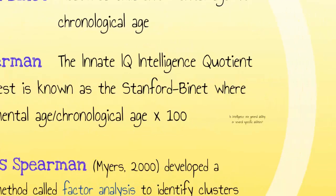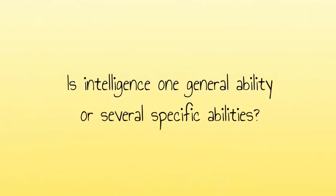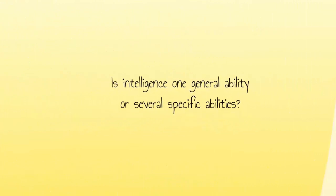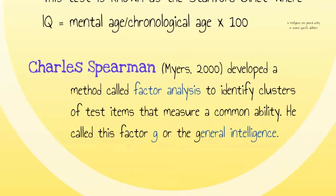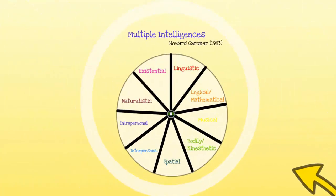Is intelligence one general ability, or several specific abilities? Spearman developed a method called factor analysis to identify clusters of test items that measured a common ability, and he called this factor G, or general intelligence. However, more recently, Howard Gardner has done work on multiple intelligences.